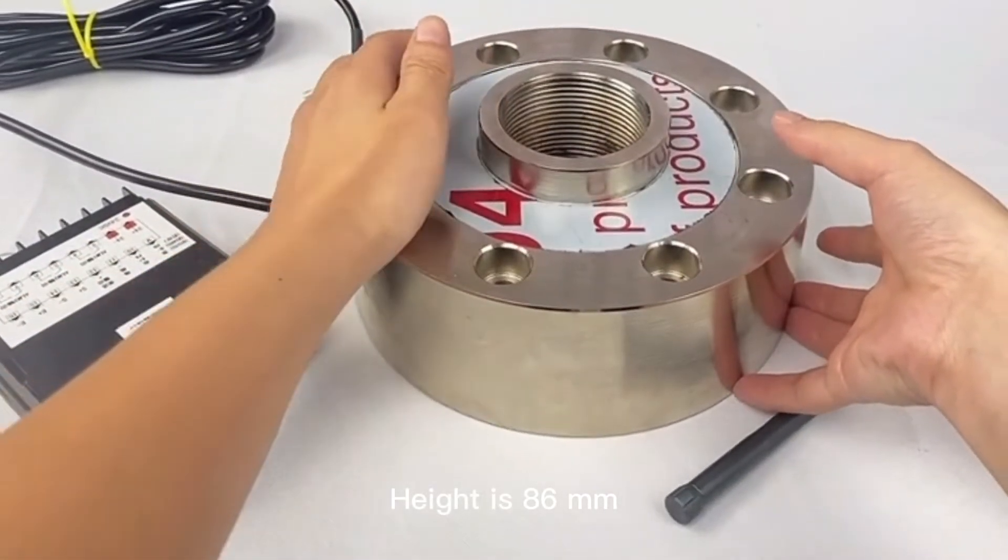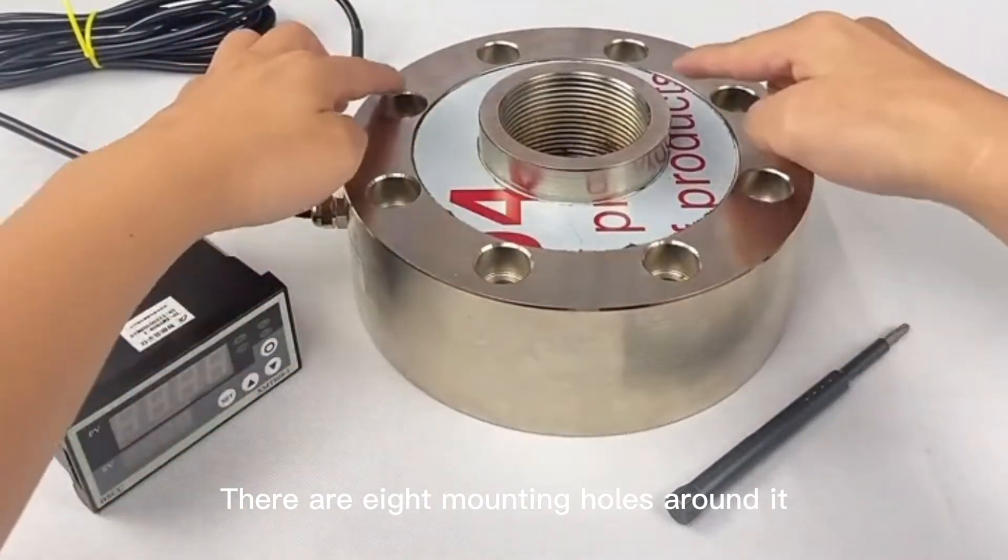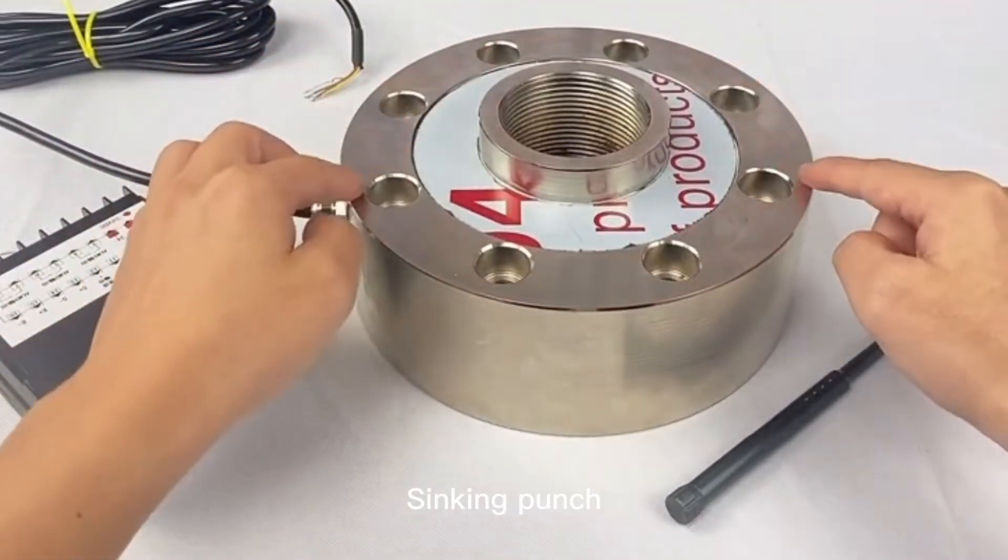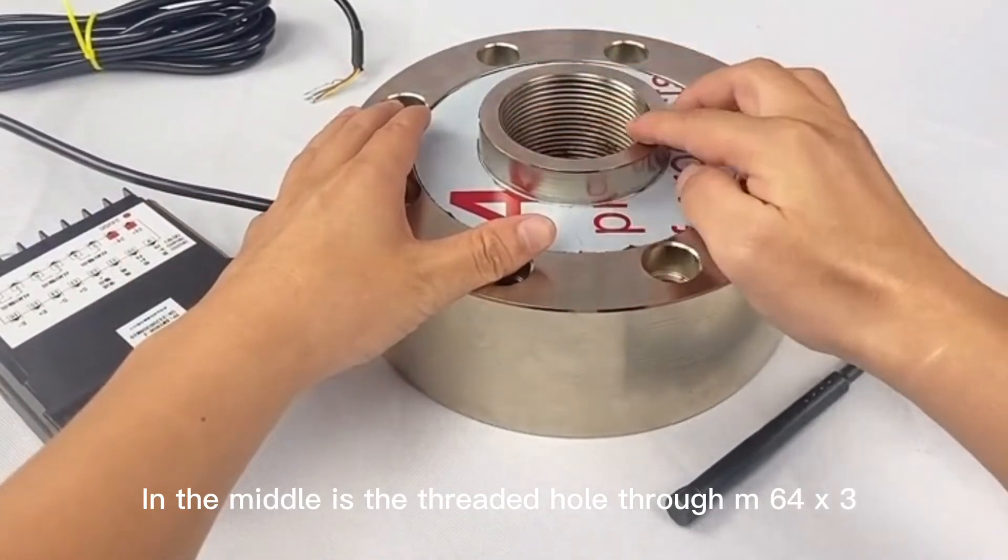Height is 86 mm. There are 8 mounting holes around it with sinking punch. In the middle is the threaded hole, M6 4x3.